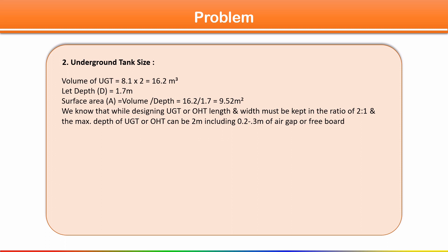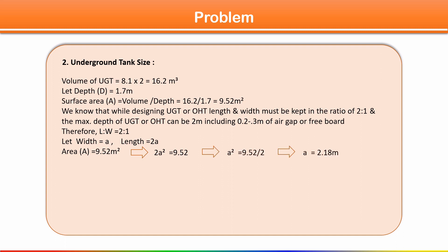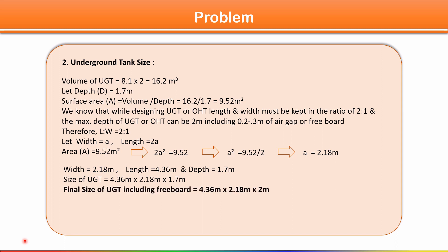For UGT, length to width ratio is maintained at 2:1. Let width = a, length = 2a. Area = 2a² = 9.52, so a² = 4.76, giving a = 2.18 meters. Therefore width = 2.18 m and length = 2 × 2.18 = 4.36 meters. This is not the final size — freeboard must be added.